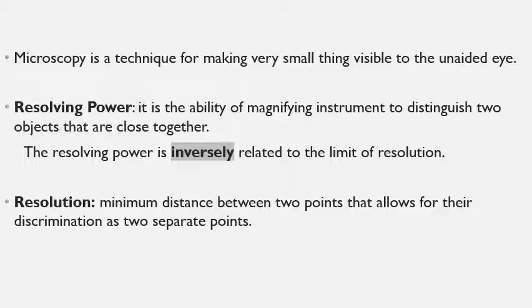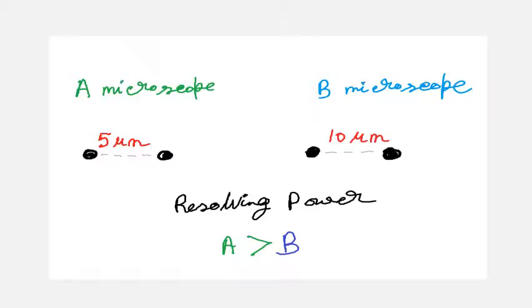This is why resolving power is inversely related to the limit of resolution. In this example, 5 micrometres is the resolution, and microscope A has better resolving power because it can distinguish objects at a smaller distance. A lower resolution value means the instrument has better resolving power. Microscope A has the ability to distinguish objects that are closely spaced.